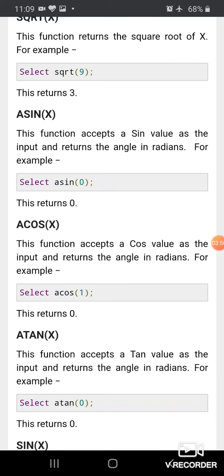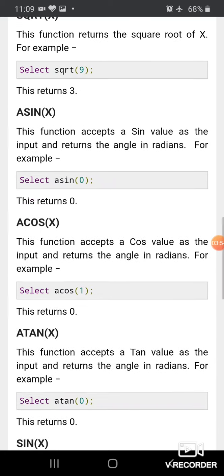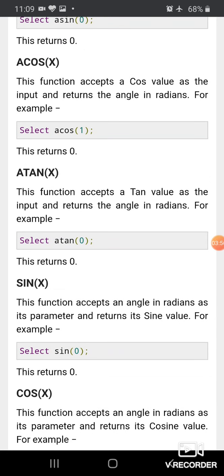ACOS(X) accepts a cosine value and returns the angle in radians. Similarly, there is ATAN(X) - it accepts a tan value as input and returns the angle in radians.